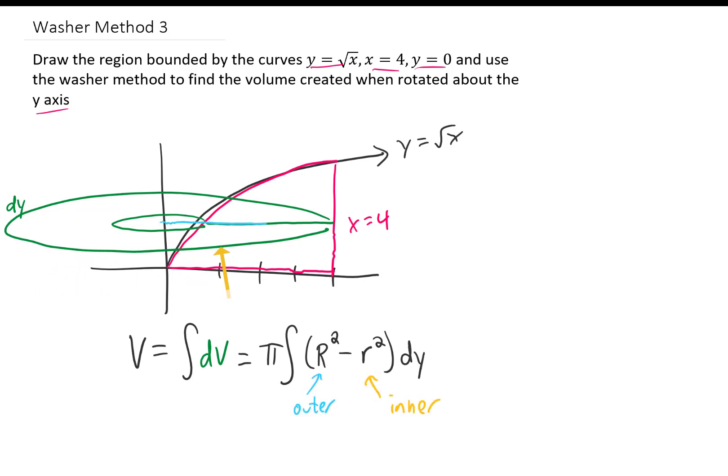Now the outer radius of this washer is just going to be four no matter what. No matter where I slice this region to get a washer, the outer radius is given by the equation x equals four. So in our volume equation, we can plug in capital R equals four.